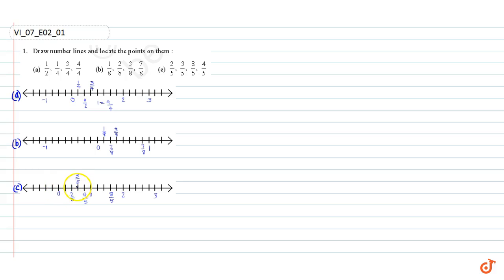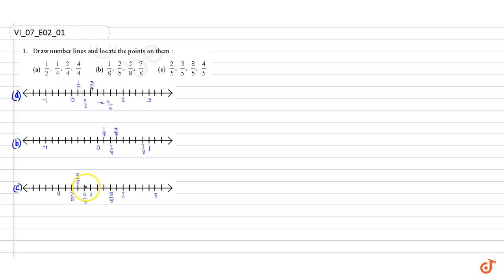8 by 5 is equal to 1 plus 3 by 5. 4 by 5 represents 4/5 of the gap between 0 and 1 — that is here: 1, 2, 3, 4 — 4 by 5 is here. These are our answers.